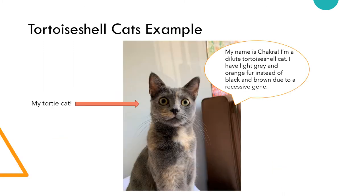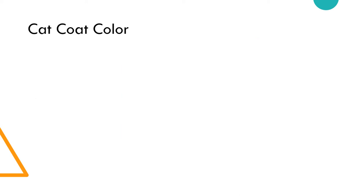Now let's look at an example using tortoiseshell cats. In cats, coat color alleles are X-linked.